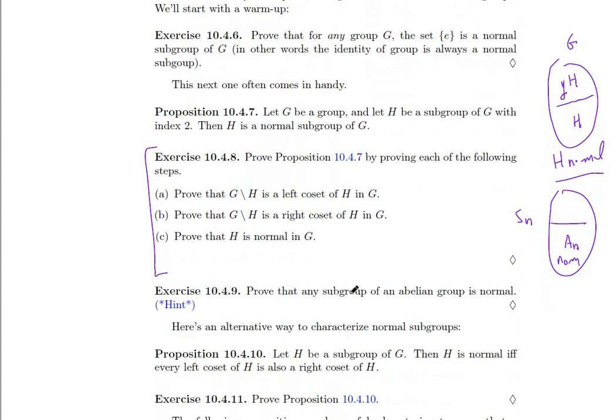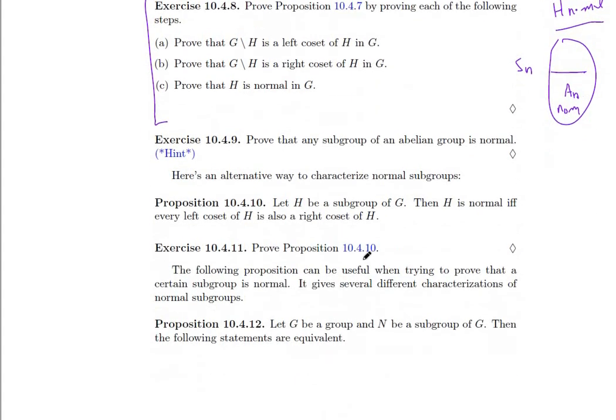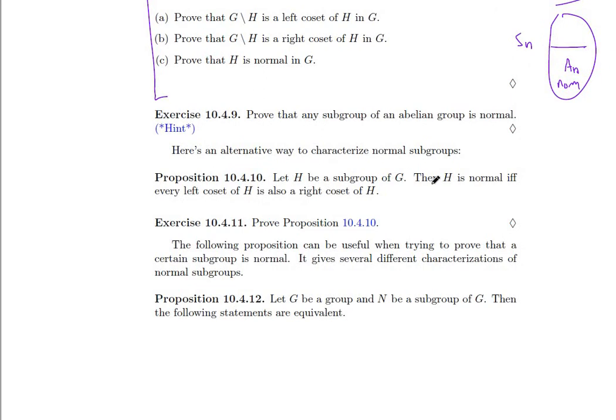Now any subgroup of an abelian group is normal. And we can also characterize normal subgroups by this weaker condition. H is normal if and only if every left coset is also a right coset.